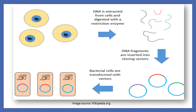A suitable host can be a bacterial strain or yeast. Once a genomic library has been created, it is screened to identify the gene of interest. One of the most common library screening techniques is called colony hybridization. In the process of genomic library construction using phage vectors, the process of identification of the gene of interest is called plaque hybridization.